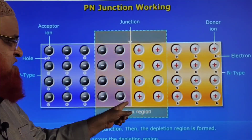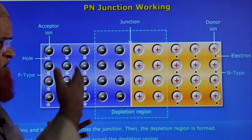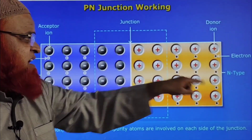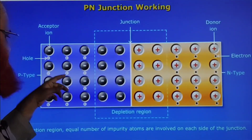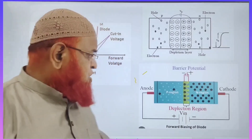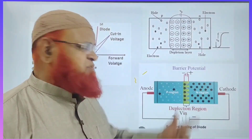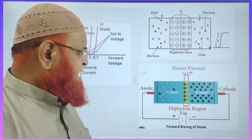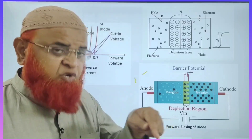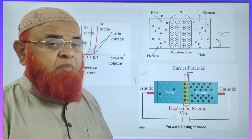This is called a junction — junction of two diodes, I mean positive and negative type. n-type means negative type, p-type means positive type. You know this is a p-type semiconductor, n-type semiconductor. In p-type semiconductor, p means positive type; n means negative type.